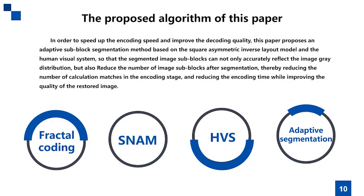In order to speed up the encoding speed and improve the decoding quality, this paper proposes an adaptive sub-block segmentation method based on the square asymmetric inverse layout model and the human visual system, so that the segmented image sub-blocks can accurately reflect the image-grade distribution and reduce the number of image sub-blocks after segmentation. This reduces the number of calculation matches in the encoding stage, reducing encoding time while improving the quality of the restored image.